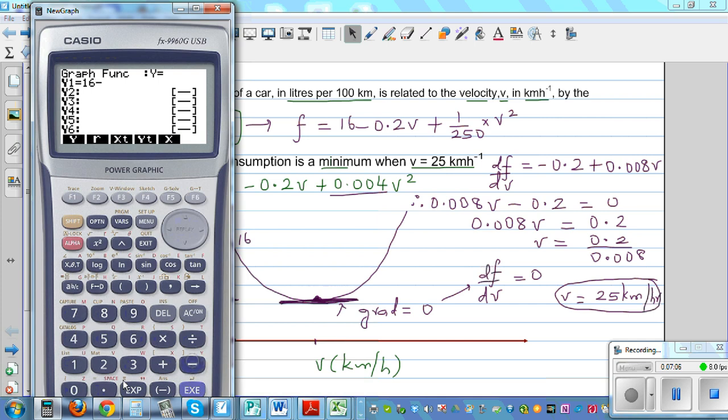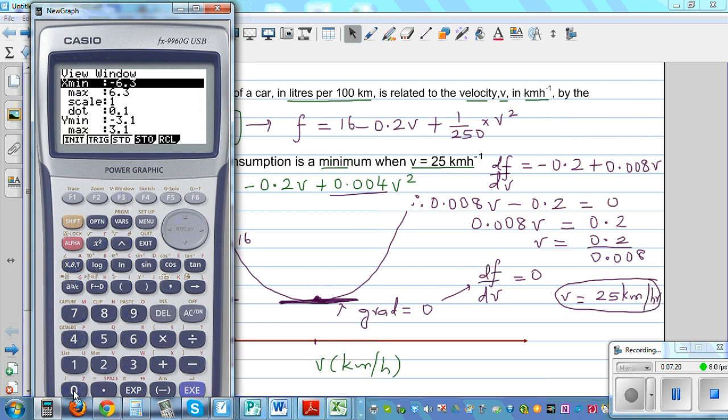So let me type in the function: 16 minus 0.2x plus 0.004x². I need to set the scale. I'll go from 0 to 100, and on Y I have to go from 0 to 20 would do, because I know the Y intercept is 16. So this is your graph.